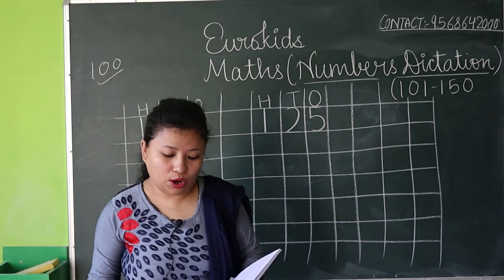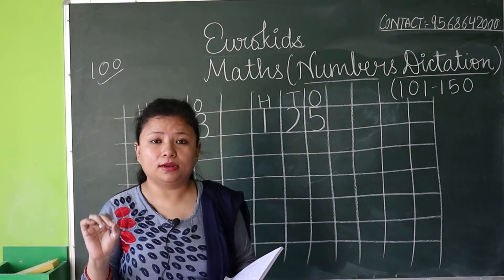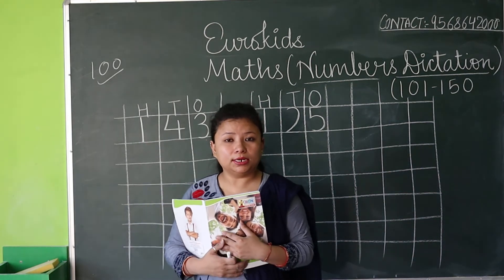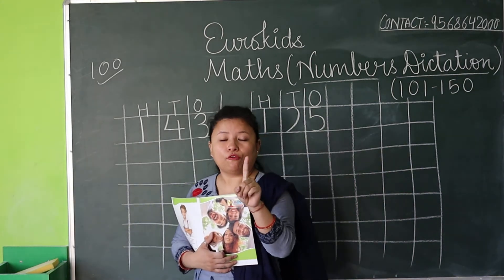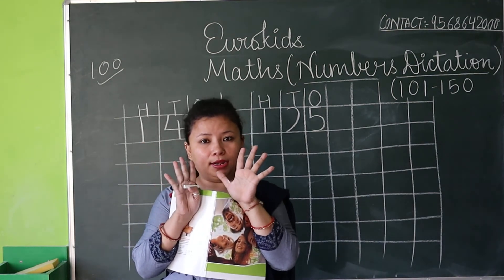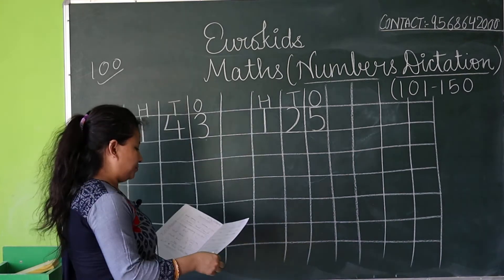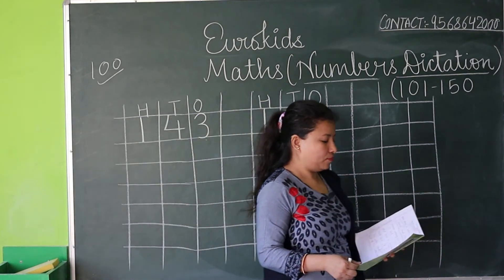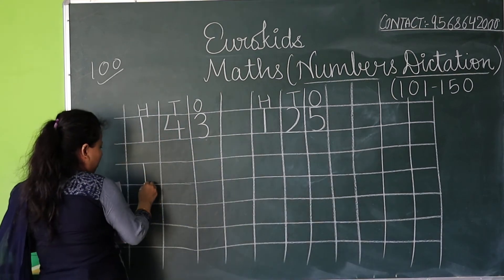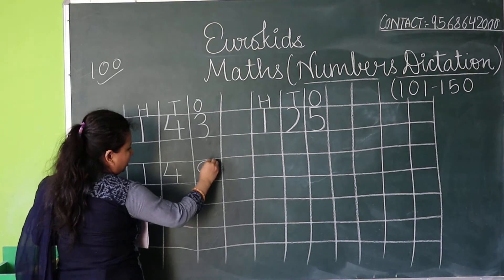Now my next number is 149. 149 — hundred means one, 40 means four, and nine — 149. Now ma'am is checking — are you writing?